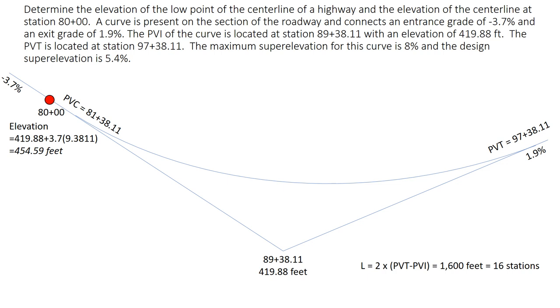That PVI has an elevation of 419.88 feet, and so we're going to take that elevation and add the grade times that distance, so 3.7 times 9.3811 gives us an elevation at station 80 of 454.59 feet.